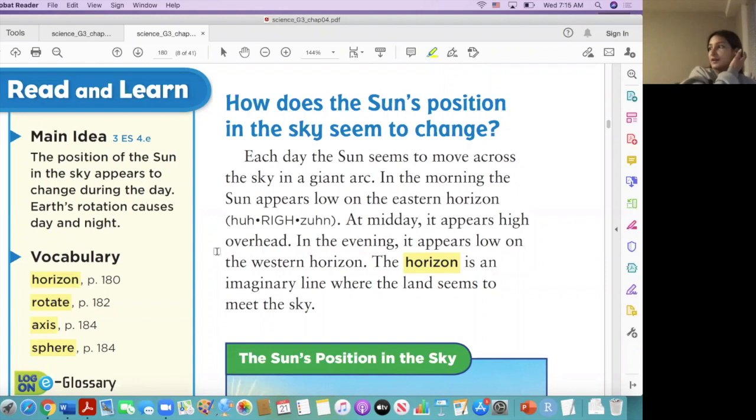Exactly right. So when we try to look for the horizon, we don't actually look for a line, right? There's not going to be a line drawn on the earth, but we kind of can see, you know, where the land and the sky kind of start or meet. Okay, go ahead.